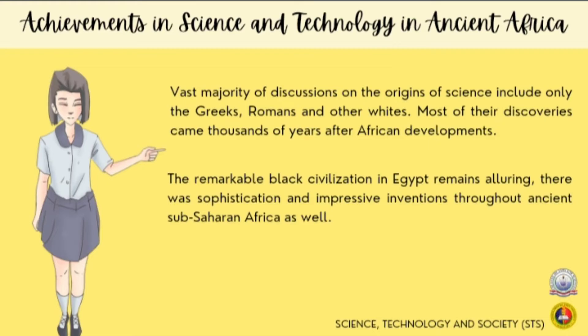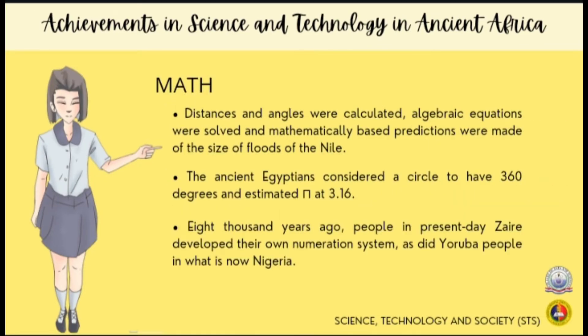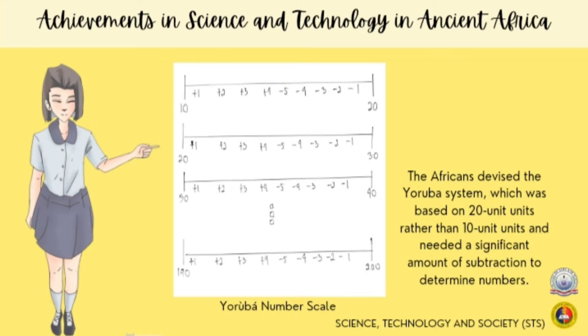The remarkable Black civilization in Egypt remains alluring. There was sophistication and impressive inventions throughout ancient sub-Saharan Africa as well. Many modern high school level concepts in mathematics were first developed in Africa, as was the first method of counting. More than 35,000 years ago, Egyptians scripted textbooks about math that included division and multiplication. Distances and angles were calculated; they considered a circle to have 360 degrees and estimated pi at 3.16. About 8,000 years ago, people in present-day Zaire developed their own numeration system, as did the Yoruba people in what is now Nigeria. The Yoruba system was based on units of 20 instead of 10, and required a significant amount of subtraction to determine numbers.